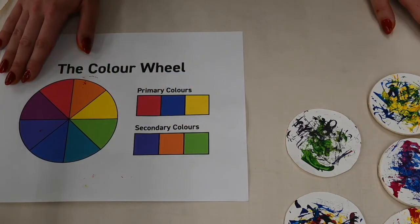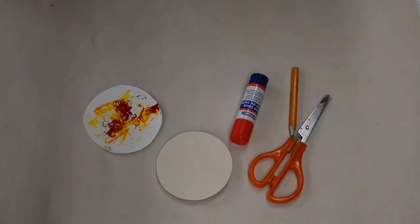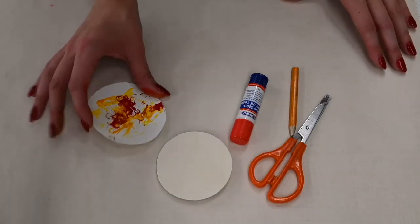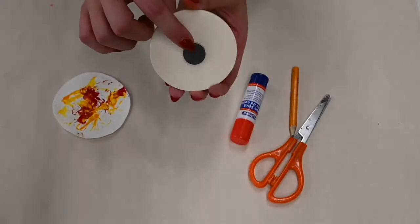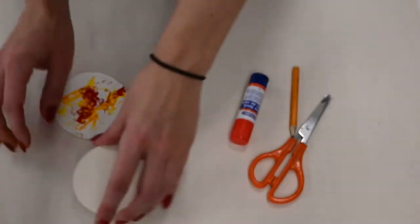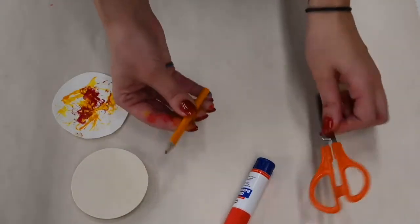Okay, so let's move on to making our magnets. So to finish our project, we're going to grab one of our favorite paintings, one of our wooden rounds with the magnet on the back. We'll also need our glue stick, a pencil, and some safety scissors.